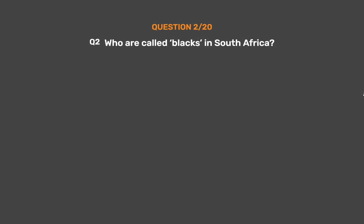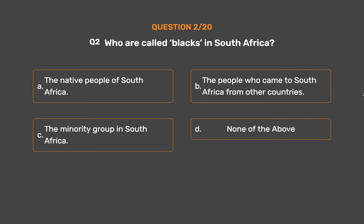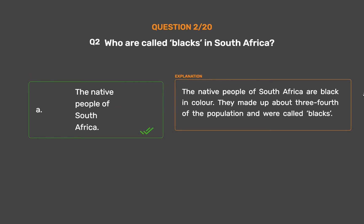Question 2: Who are called blacks in South Africa? Option A: The native people of South Africa. Option B: The people who came to South Africa from other countries. Option C: The minority group in South Africa. Option D: None of the above. The correct answer is Option A: The native people of South Africa. The native people of South Africa are black in color. They made up about three-fourths of the population and were called blacks.